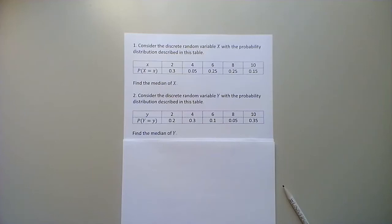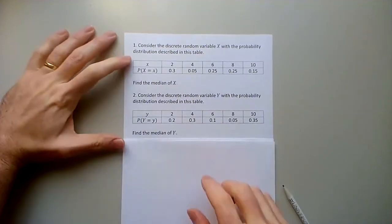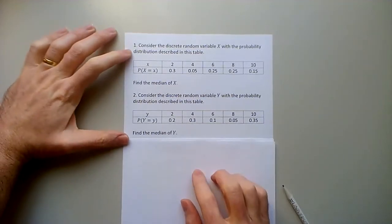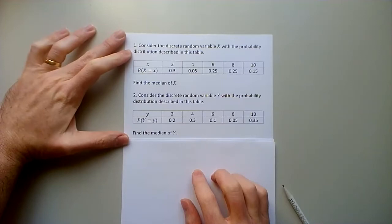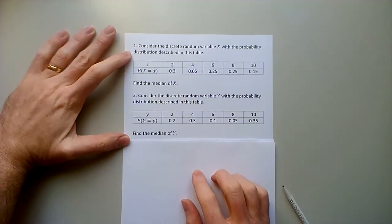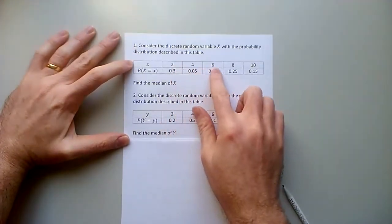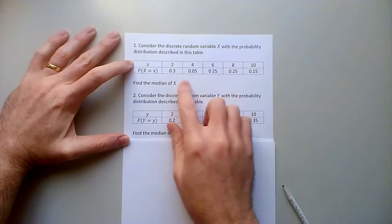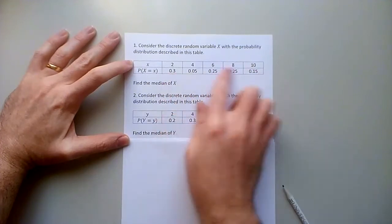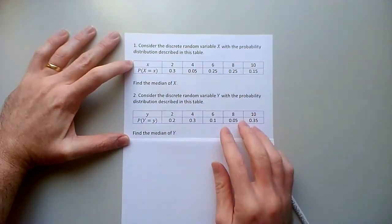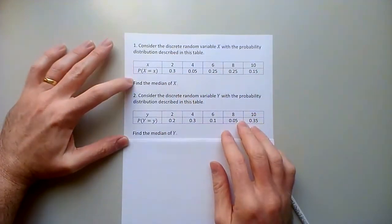There are two problems here and they look really similar. The first one says: consider the discrete random variable X with the probability distribution described in this table, and it has values 2, 4, 6, 8, 10 and several probabilities to go with them. Find the median of X.